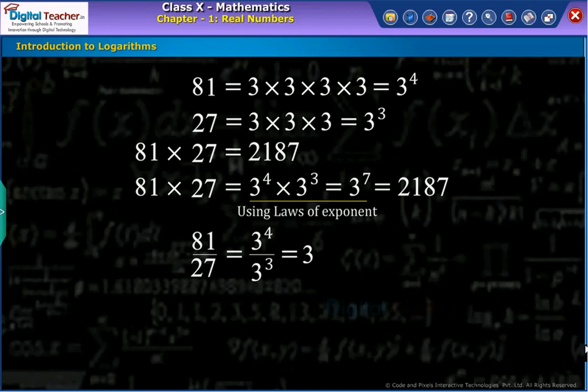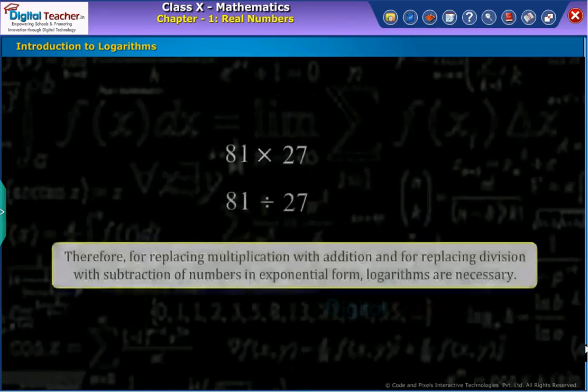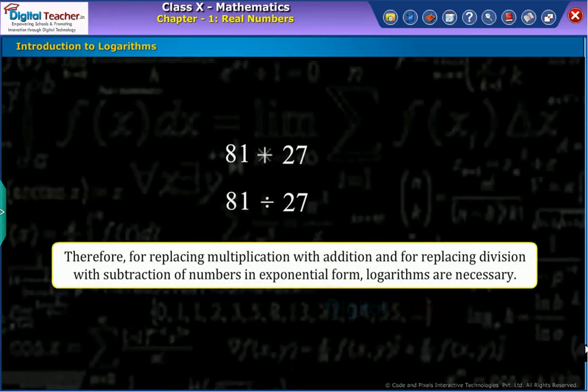Similarly, if we want to divide 81 by 27, we obtain the number 3 as per the laws of exponents. Therefore, for replacing multiplication with addition and for replacing division with subtraction of numbers in exponential form, logarithms are necessary.